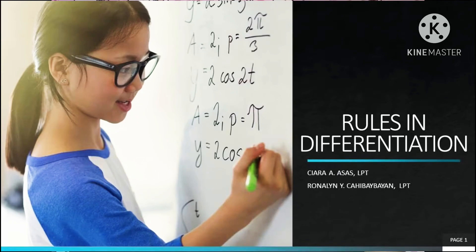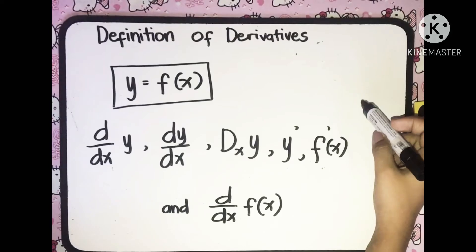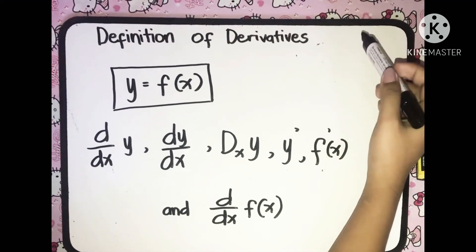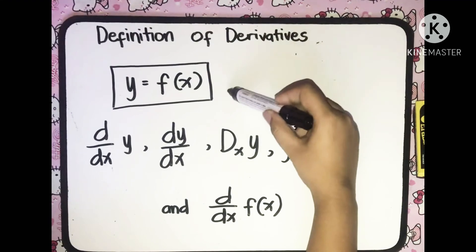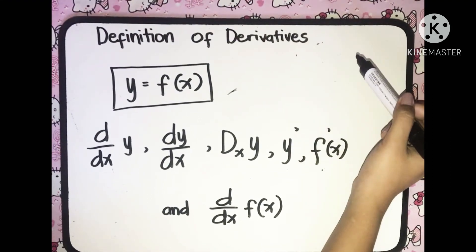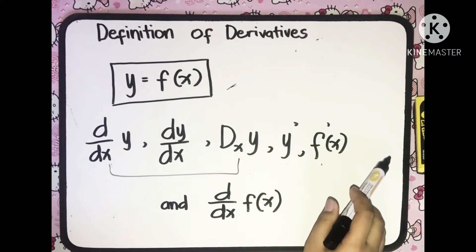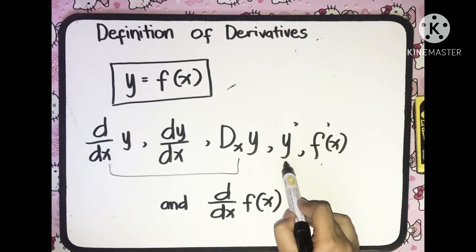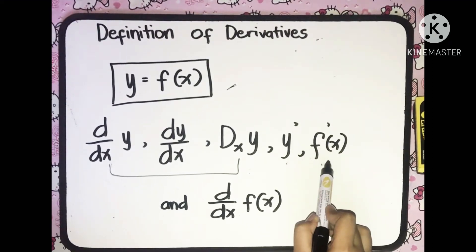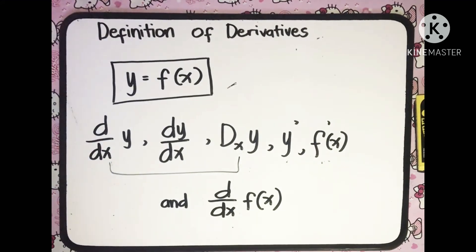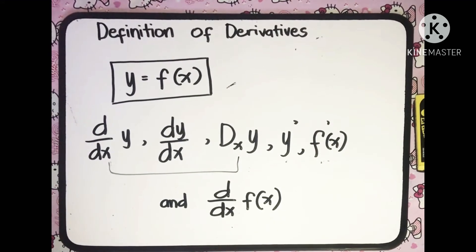Hi guys, let's discuss derivatives. One of the most important uses of evaluating limits is to find the derivative of a function. This is the definition of derivatives, wherein the derivative of a function, let's say y equals f of x with respect to x, may be indicated by any one of these symbols. The first three symbols are read as 'the derivative of y with respect to x,' this one is 'y prime,' this is 'f prime of x,' and lastly, 'the derivative of f of x with respect to x.' So if you encounter any of these symbols, you are going to solve for the derivative.